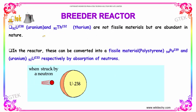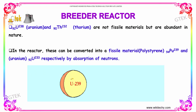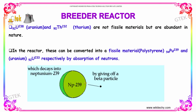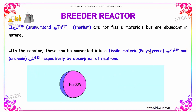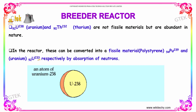Uranium and thorium are not fissile materials but are abundant in nature. In the reactor, these can be converted into fissile material — U-233 and plutonium respectively — by absorption of neutrons.